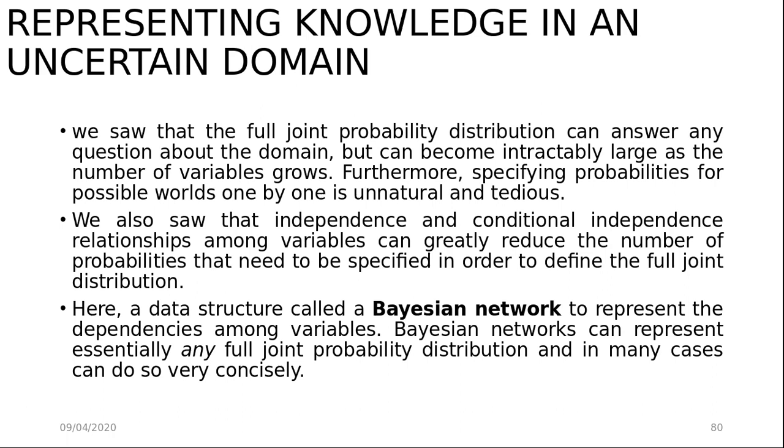Furthermore, specifying probabilities for possible worlds one by one is unnatural and tedious. Also, the independence and conditional independence relationships among variables can greatly reduce the number of probabilities that need to be specified in order to define the full joint distributions. A data structure called Bayesian Networks is used to represent the dependencies among variables, and Bayesian Networks can represent essentially any full joint probability distribution and in many cases can do so very concisely.